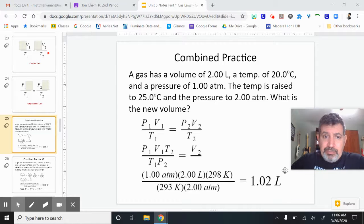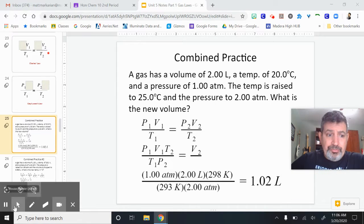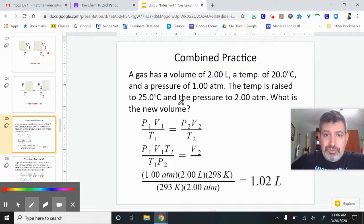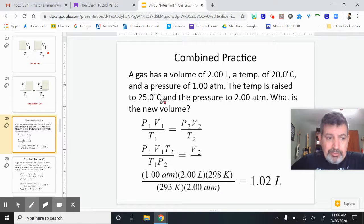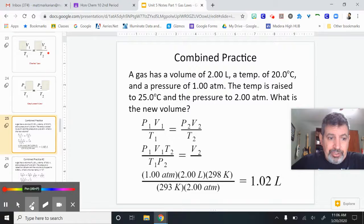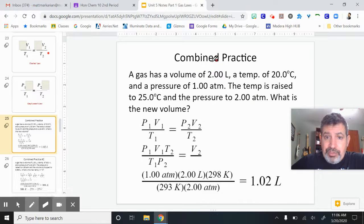Let's look at a practice for this. We've got a combined gas law practice. When you're doing these, go through and label things in the problem. It really helps when you're trying to do this stuff. So here I've got a volume, which I'm going to call V1 - that's 2.00 liters. A temperature, which is in the dreaded Celsius. Get it into Kelvin. That'll be T1.